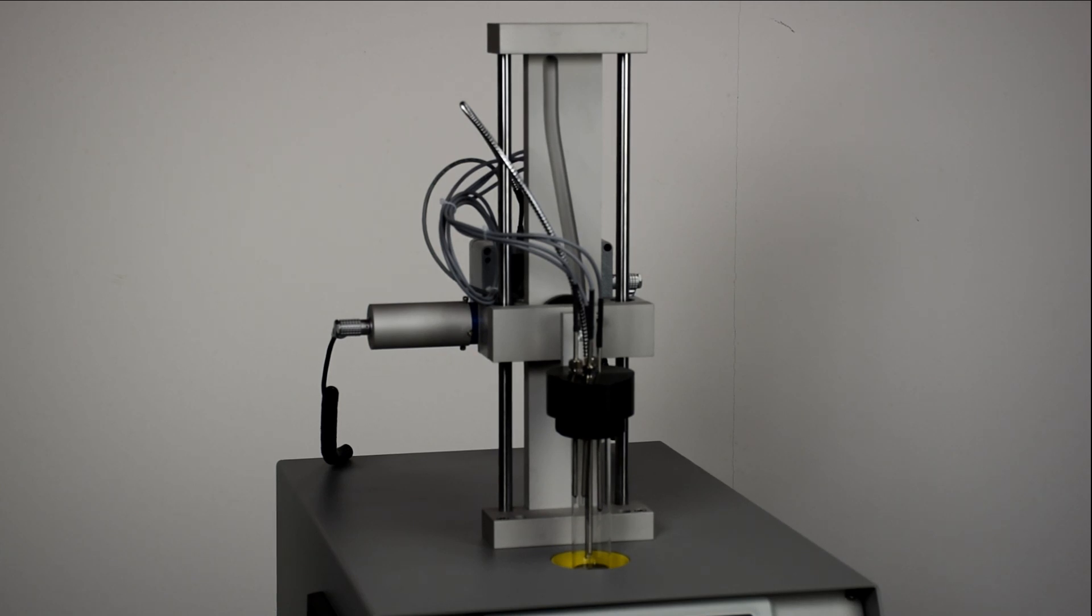Cloud point is determined by measuring the percentage of reflection of an infrared beam projected towards the reflecting jar bottom. Pour point is determined by extracting and tilting the jar while two probes detect the sample movement.